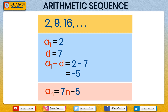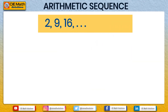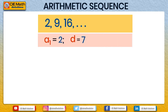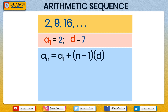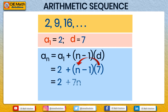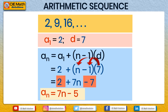Let us verify using the formula. With a1 = 2 and d = 7: an = 2 + (n − 1) × 7 = 2 + 7n − 7 = 7n − 5. So an = 7n − 5, confirming our answer.